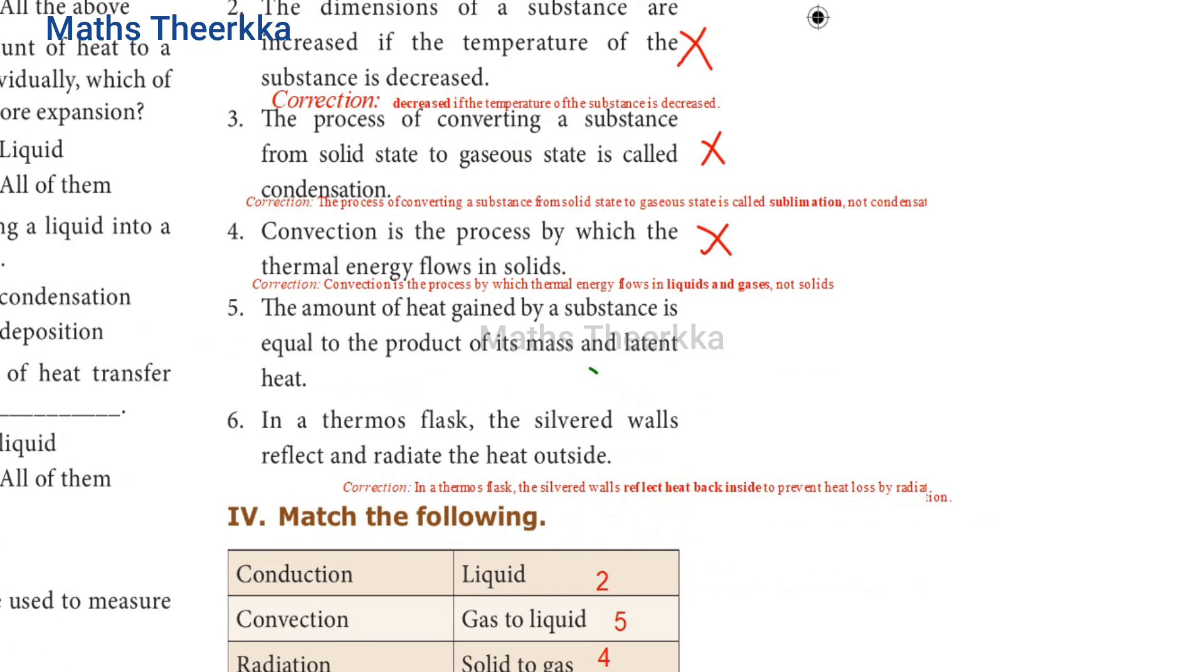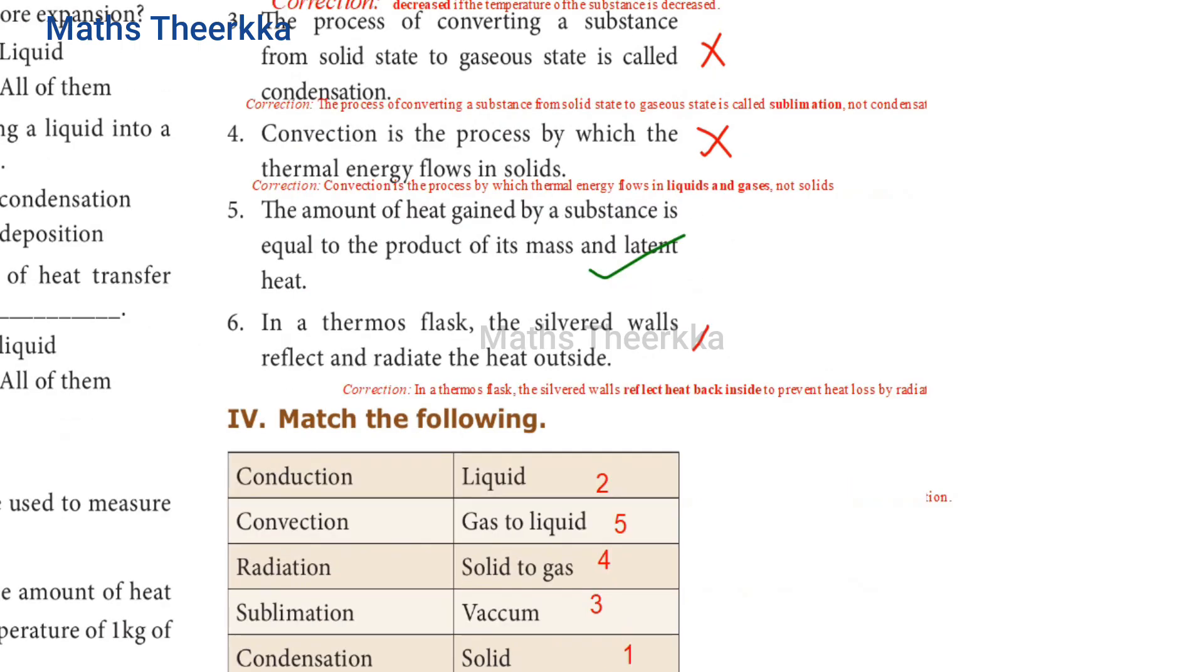Fifth one. The amount of heat gained by a substance is equal to the product of its mass and latent heat. The answer is true.